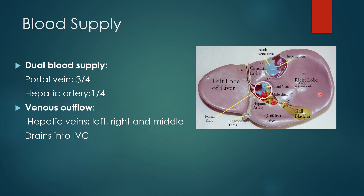To understand the myriad functions of the liver, the first important thing is to understand its blood supply. The liver has a dual blood supply: 75% of the blood is delivered to the liver via the portal vein, and 25% via the hepatic artery. The portal vein carries blood from the intestines, stomach, pancreas, and spleen, so this deoxygenated blood comes to the liver. The liver stands first in the pathway of substances absorbed from the intestine.